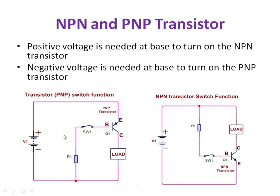Looking at the circuit structure: in an NPN transistor, when you close switch one, the positive terminal is connected to the base — so positive voltage is needed at the base to turn it on. In a PNP transistor, when you close switch one, the negative terminal is connected to the base, so there will be a sinking current.